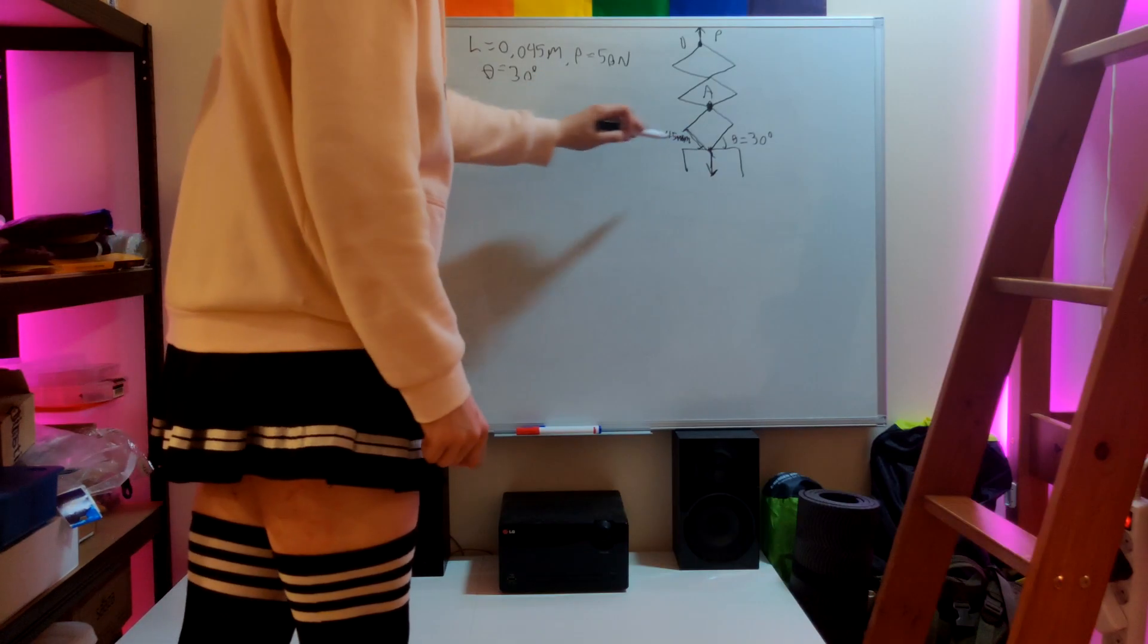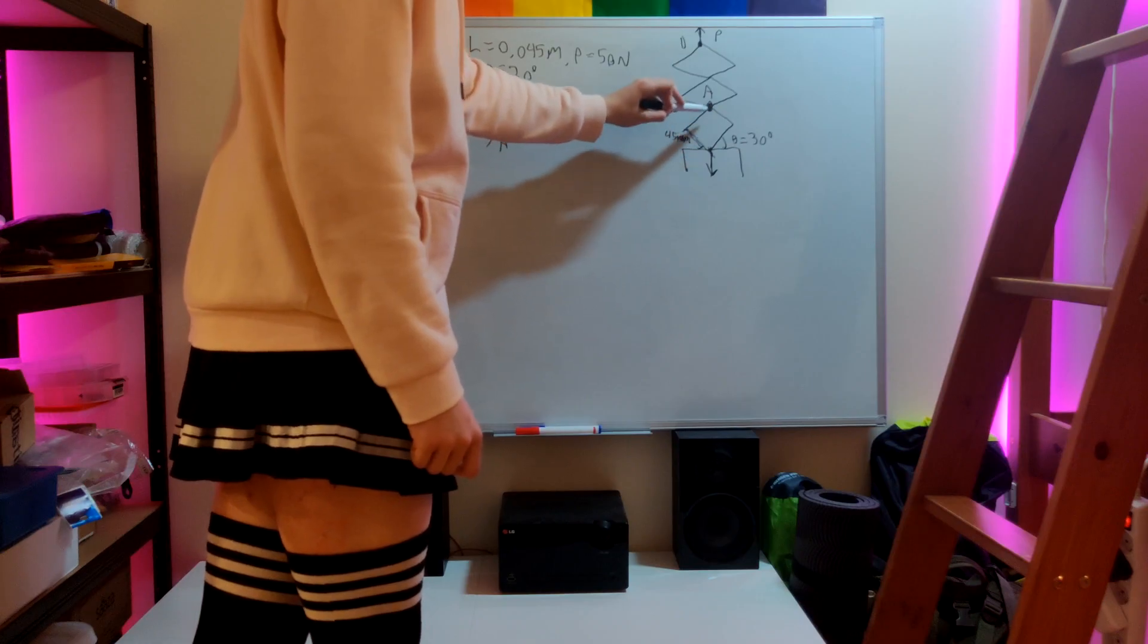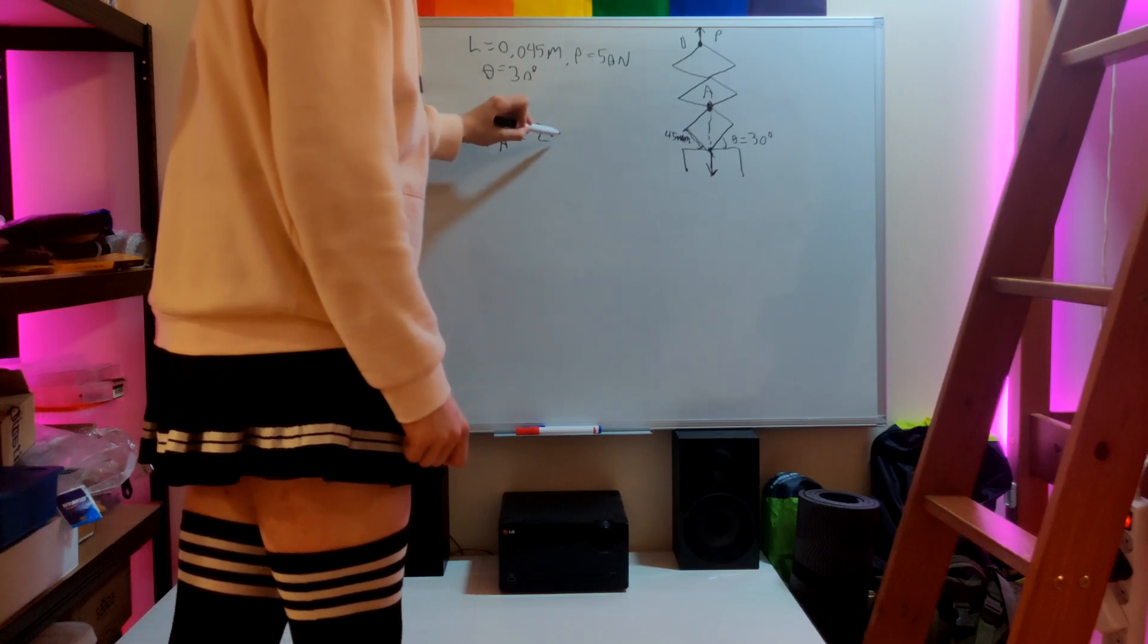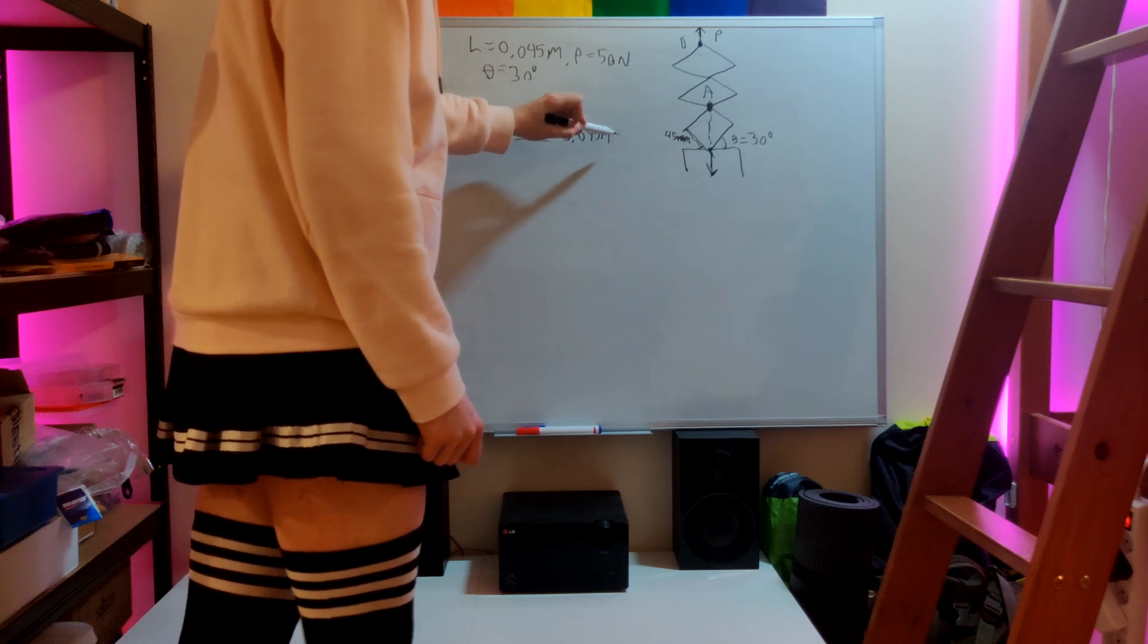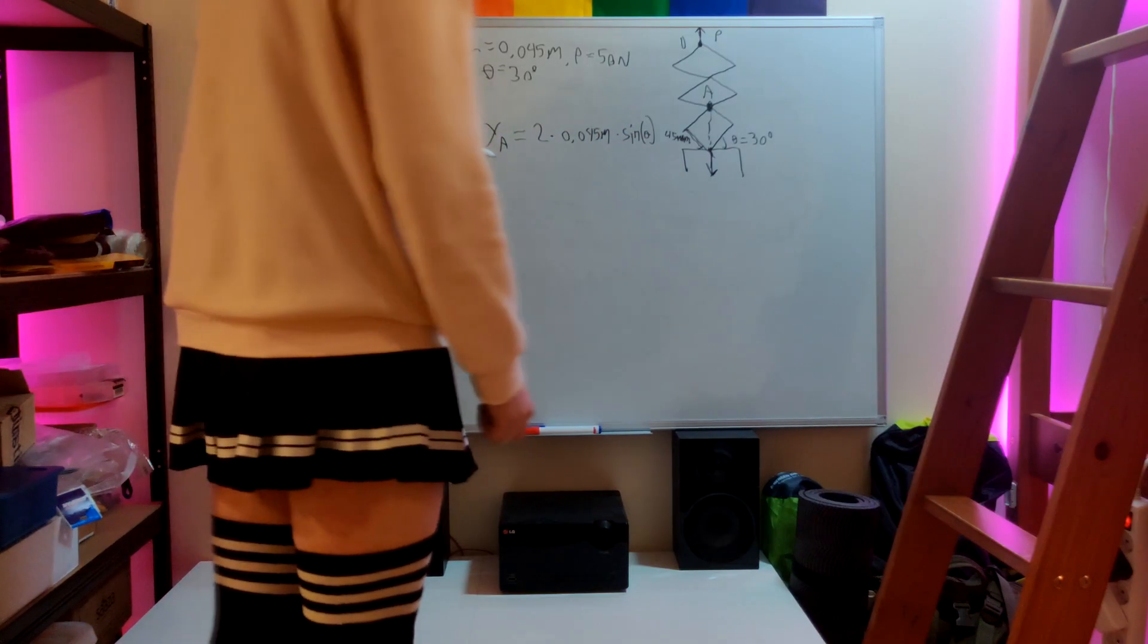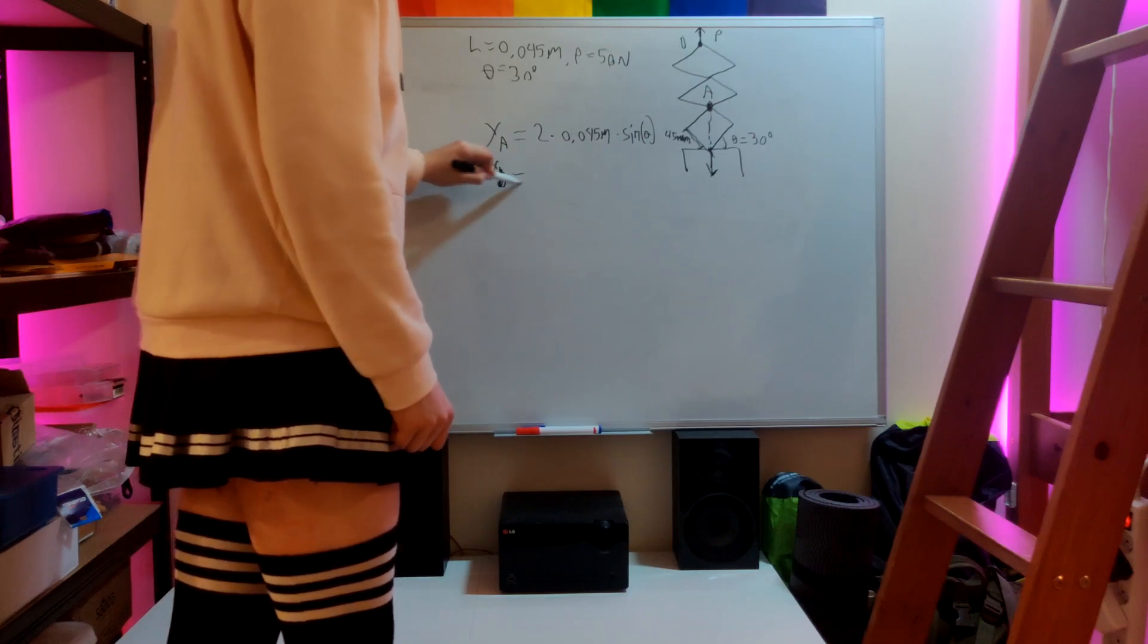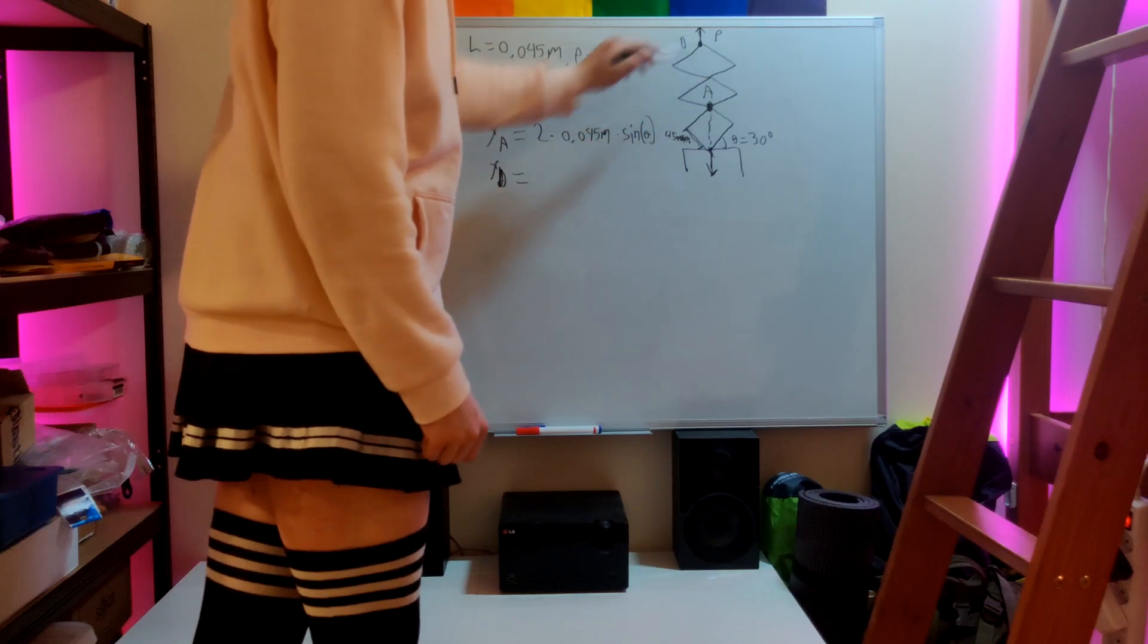YA is the coordinate for how far up. We'll first solve YA which is two times the length of each member times sine of theta. And the same thing for YD but this time it's six times because there's six members in between this.